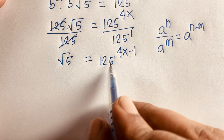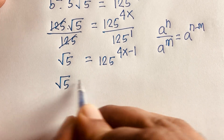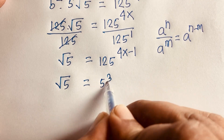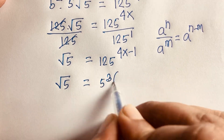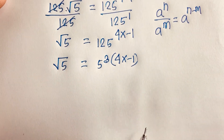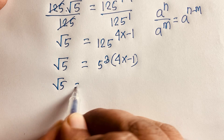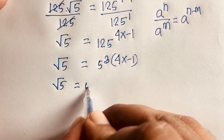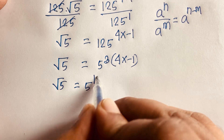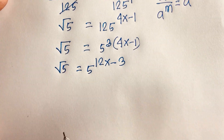Now square root of 5 and 125: 125 equals 5 to the power 3, and here is (4x − 1). So we can write square root of 5 equals 5 to the power 3 times (4x − 1), which is 12x minus 3.